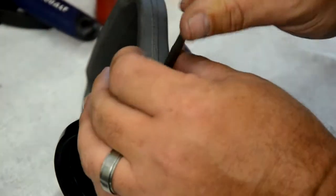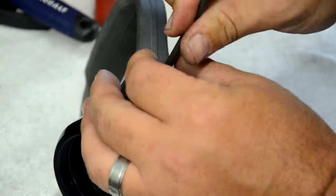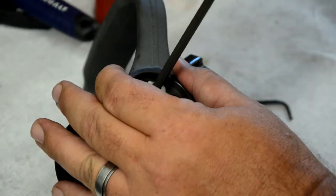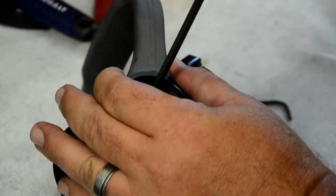You can now check that the bail handle operates freely. If it's too tight or too loose, simply adjust the dog point set screw until it's corrected.